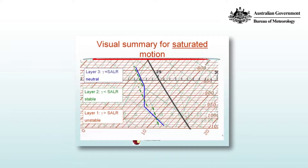For the third layer, the environmental lapse rate is equal to the saturated adiabatic lapse rate. So if you lift a saturated parcel, it's always at the same temperature as the environment, so that's neutral buoyancy.